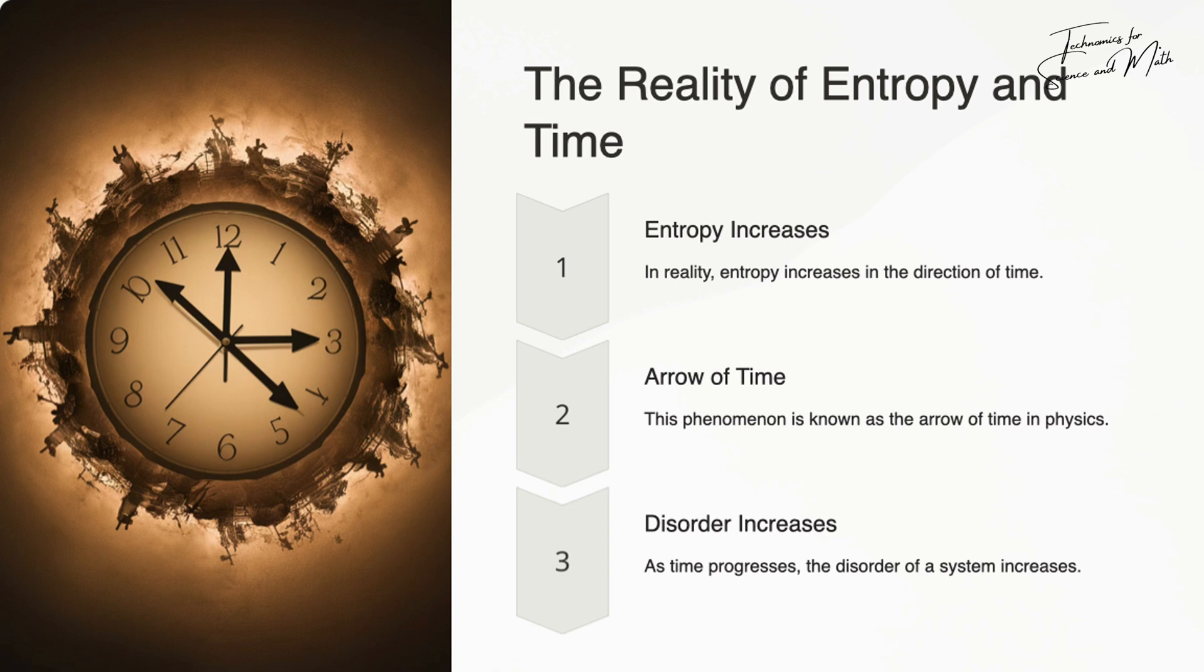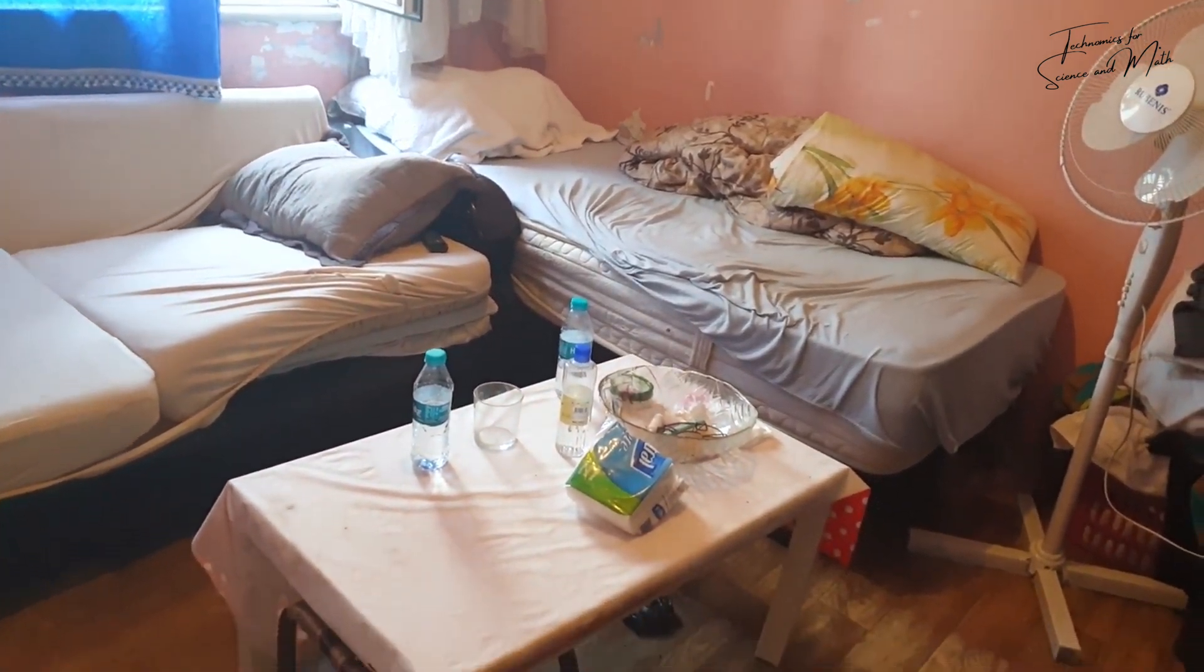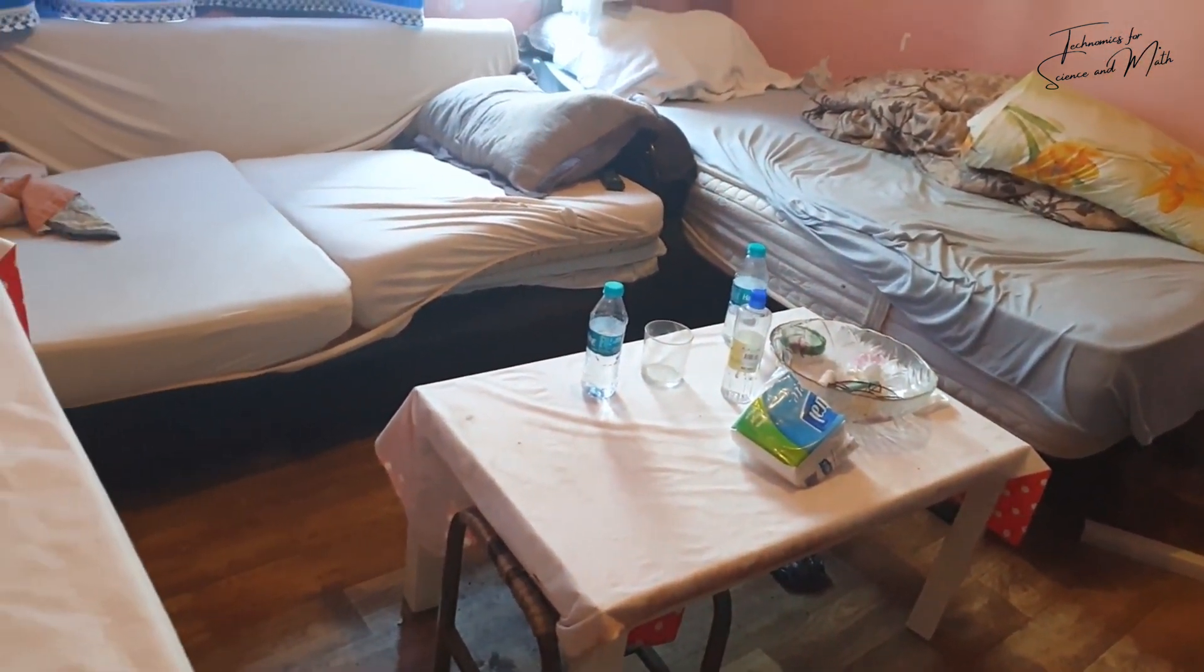Entropy increases in the direction of time. This phenomenon is known as the arrow of time in physics. As time progresses, the disorder of a system increases. For example, a room naturally becomes messier over time because entropy increases.